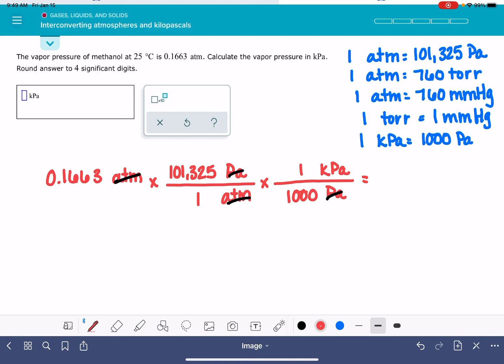And now we're ready to do the math. 0.1663 times 101,325 divided by 1,000 gives us 16.85 kilopascals.